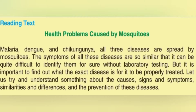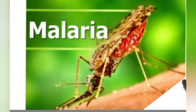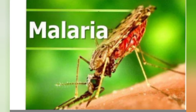These three diseases are caused by mosquitoes. They have almost similar symptoms, so it's really difficult to identify them without laboratory testing. In this chapter I'm going to explain the causes, signs, and symptoms of all three diseases caused by mosquitoes. Let's start — the first disease we are going to discuss is malaria.